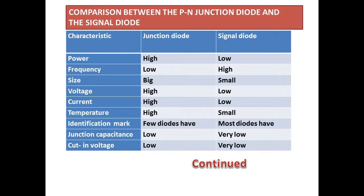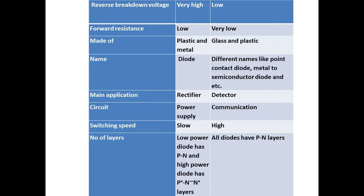Identification - junction diode, few diodes have identification marks; signal diode, most diodes have identification marks. Junction capacitance - junction diode low, signal diode very low. Cut-in voltage - junction diode low, signal diode very low.